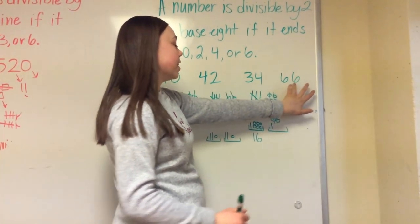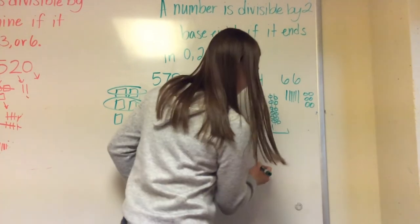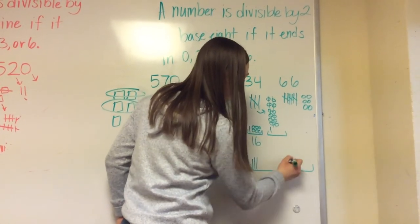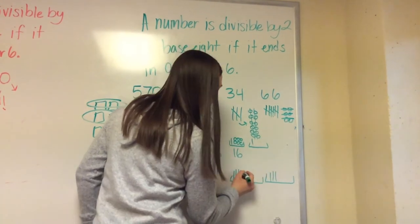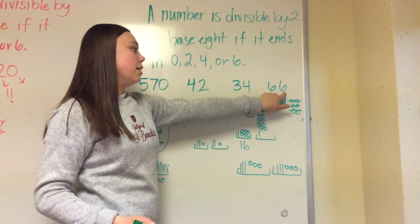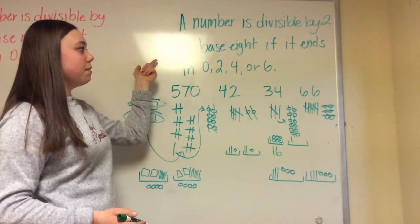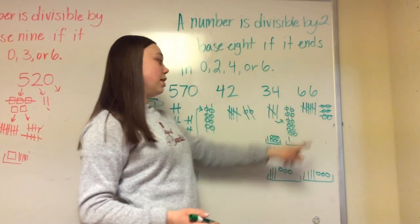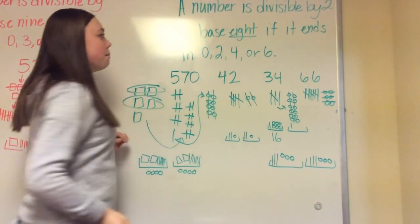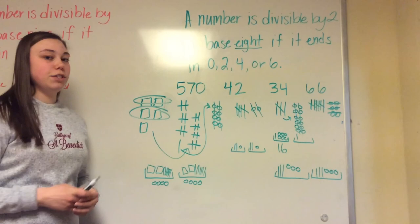Lastly, we look at our six. If we have six rods and six singles, we're dividing into two groups. We have three groups of two rods, so we give each group three rods. And then three groups of two singles, so we give three singles to each group. It evened out because we ended in six. So an important thing to remember: when working in base 8, a number is divisible by two if it ends in 0, 2, 4, or 6, because a group of eight will always distribute equally into two groups.